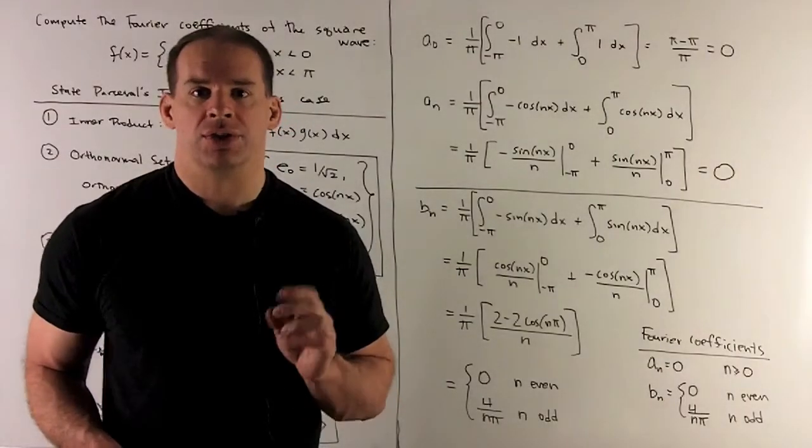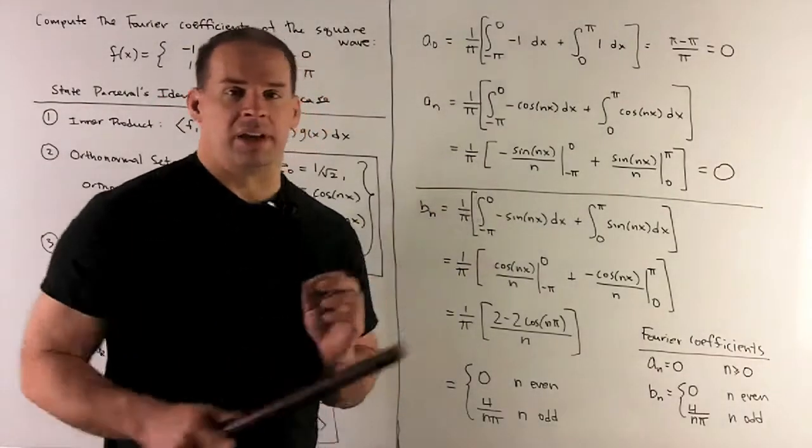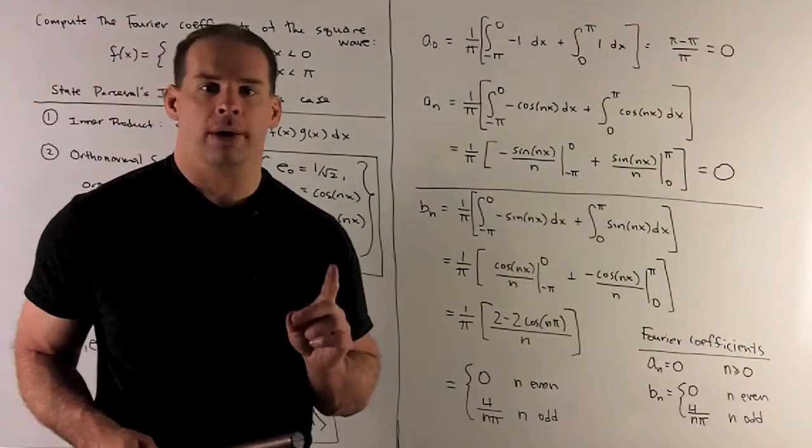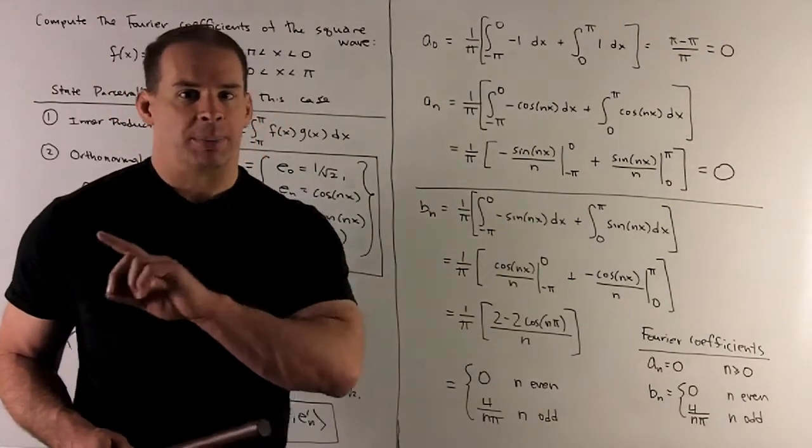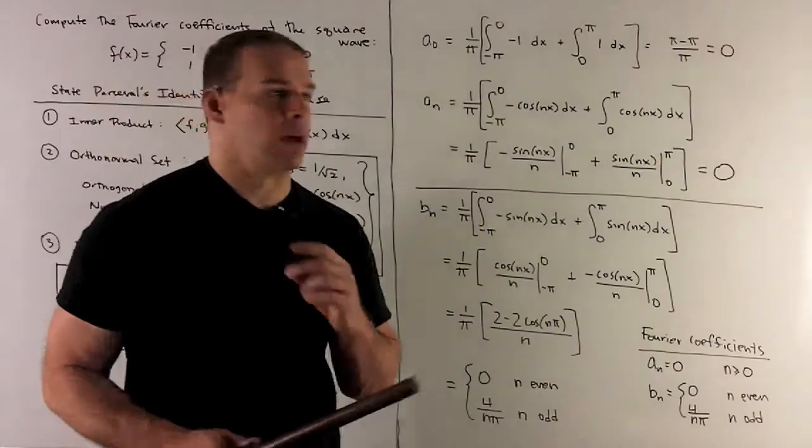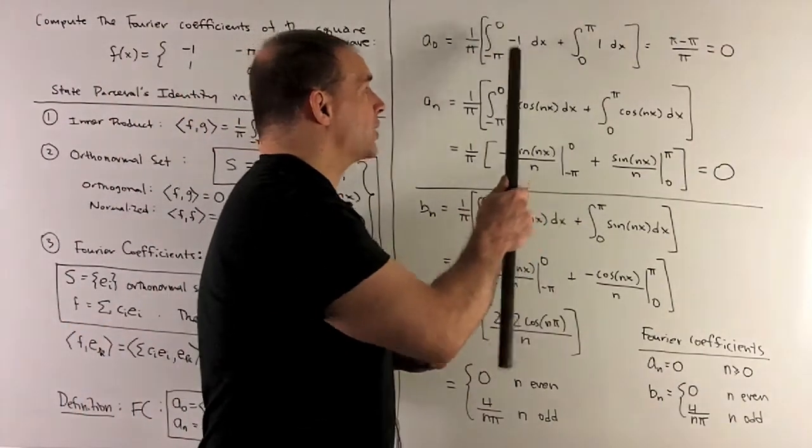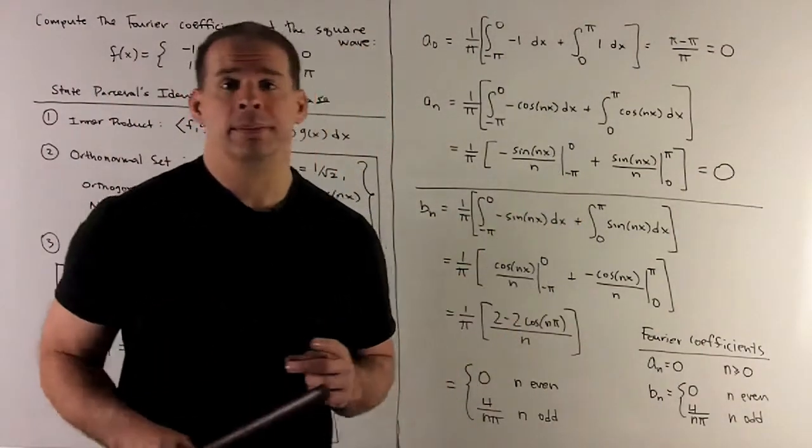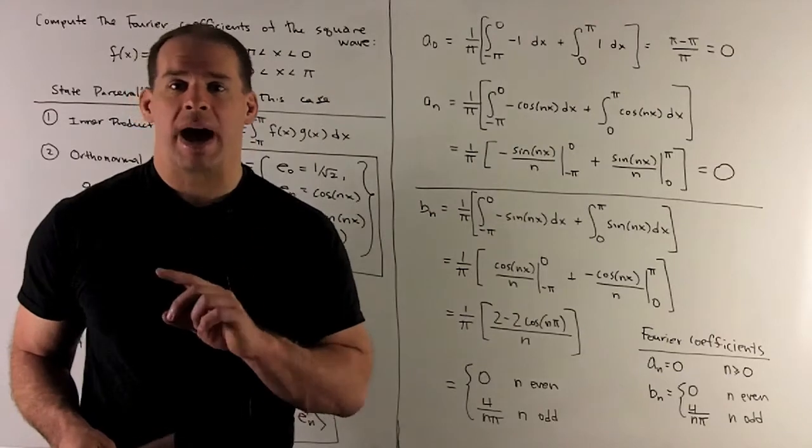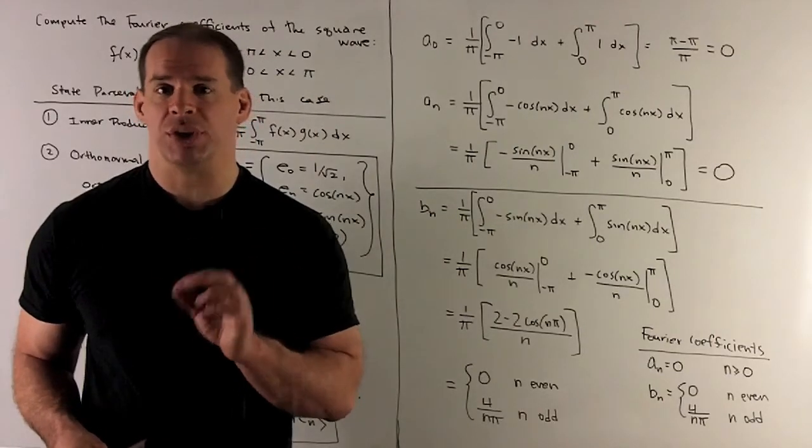Let's look at our special case. For a zero, take the inner product of f with one. Since I have a piecewise defined function, we're going to break it up into two parts. One over minus one, one over one. Then we know we get pi minus pi over pi, which is zero.